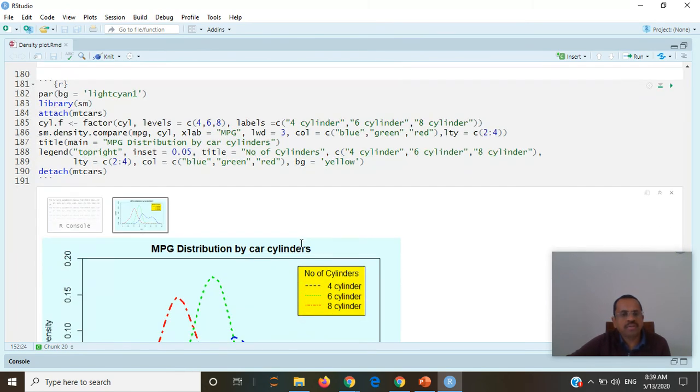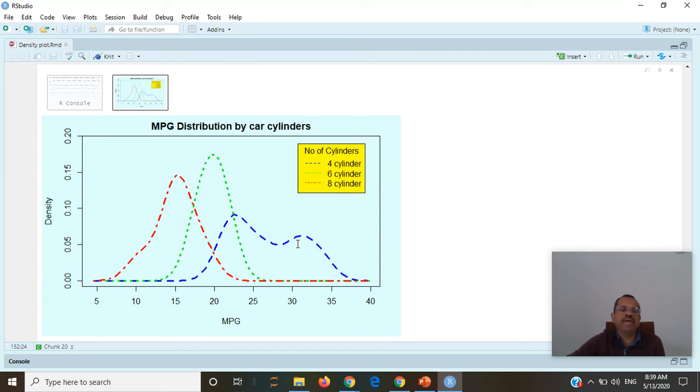Density plots are suitable in many instances and they are better than histogram. This is one of the example from mtcars data set. These are number of cylinders and with that number of cylinders we distribute the miles per gallon. As we can see easily that if there are four cylinders then there is more mileage and with eight cylinders the mileage is less. This type of distribution visualization is very difficult in histogram but with density plot we can do it very clearly.